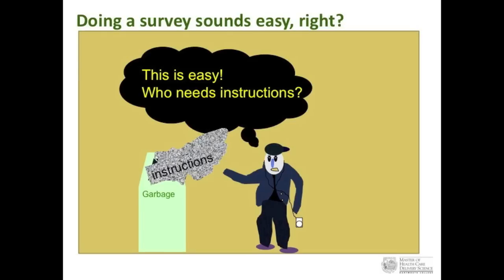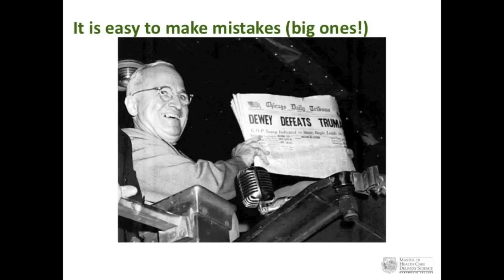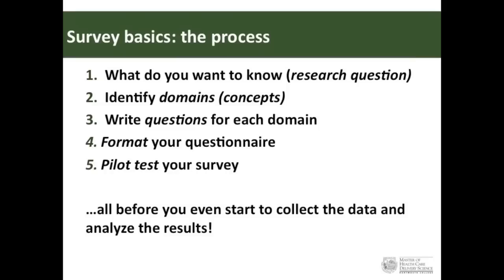It sounds easy — you just write some questions, send it out, and you're done. Who needs instructions? Well, it's easy to make big mistakes. Take the famous headline 'Dewey Defeats Truman' from the 1948 presidential election. Papers went out, but Truman won. This has been attributed to bad sampling — they picked the wrong group of people and got the wrong result. It was nearly the beginning and the end of the polling industry. It's very easy to make mistakes on all kinds of levels when doing surveys.